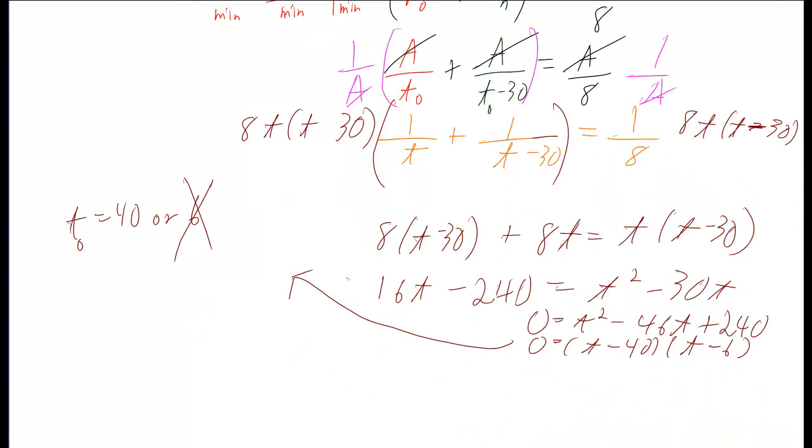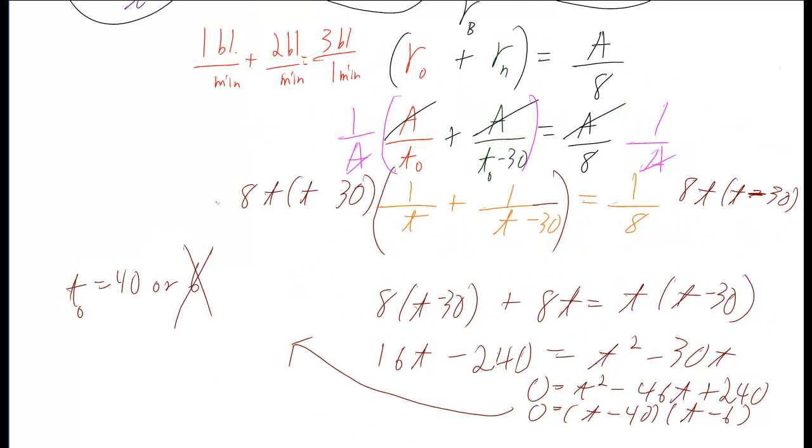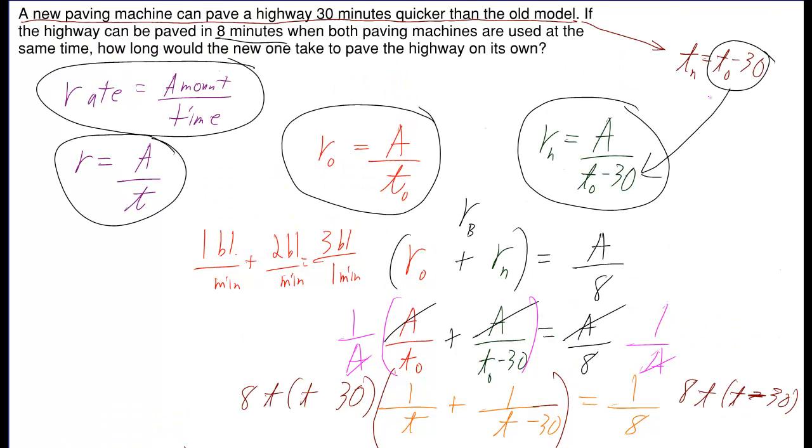So I just want to point out what you're going to get at the end. Either T is equal to forty or T is equal to six. You'll notice though I crossed out six. Because you can't plug in six into the old time, subtract thirty, and say that the new time is equal to negative twenty-four minutes. That's how long it takes the new machine to pave the road, negative twenty-four minutes? No, we don't want that. So we're going to throw that out, which means we're going to have to throw out the six.